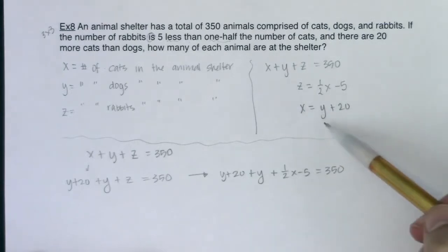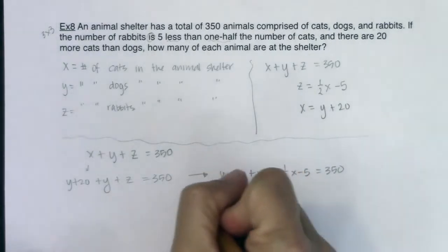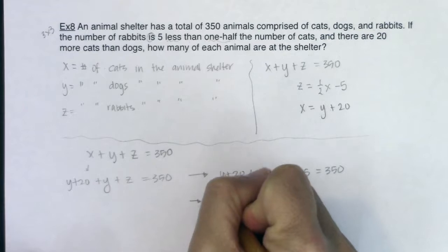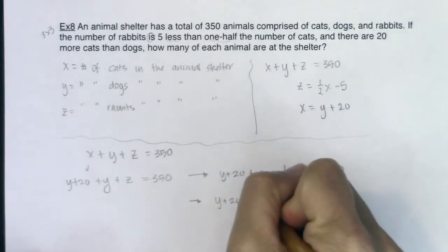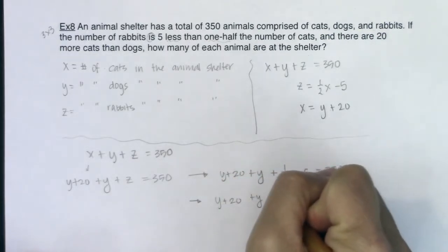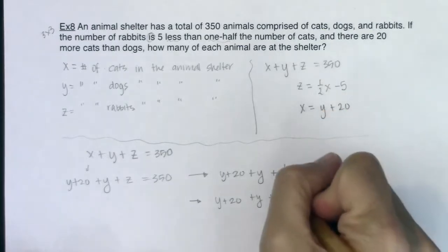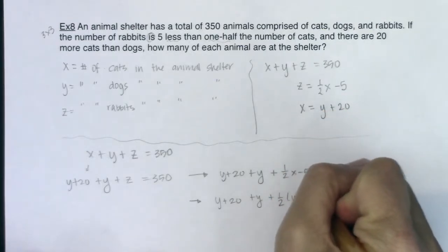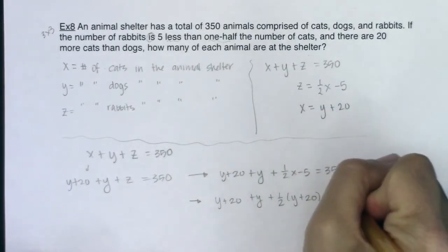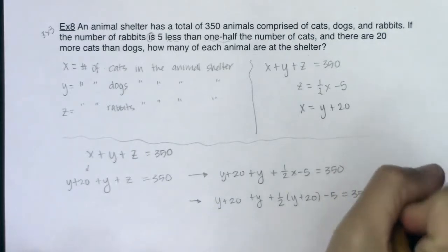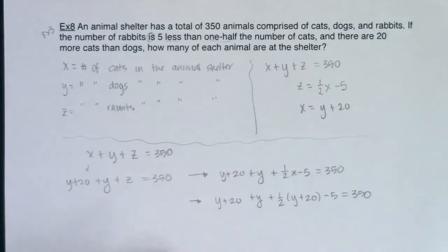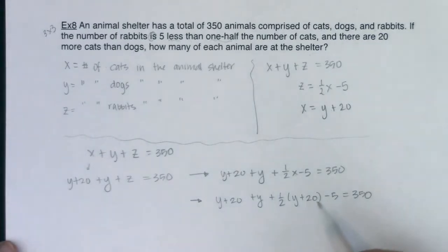But don't forget that we know what x is equal to, specifically in terms of y. So I know y plus 20, I had my y, plus one-half—now instead of x, I'm going to write y plus 20, don't forget your minus five, and that should be equal to 350. That is awesome. Because now I have one equation and one variable, and now I can solve for y.